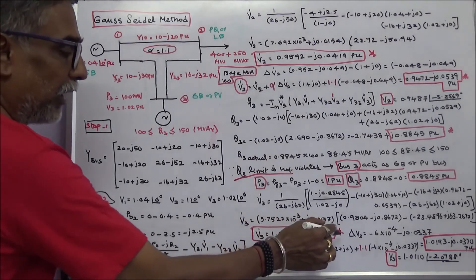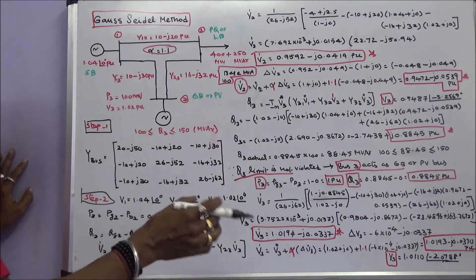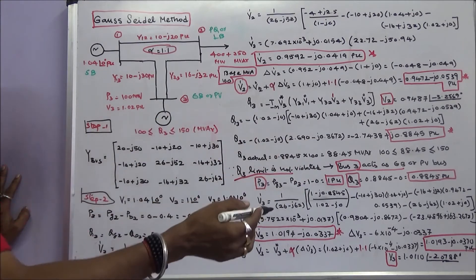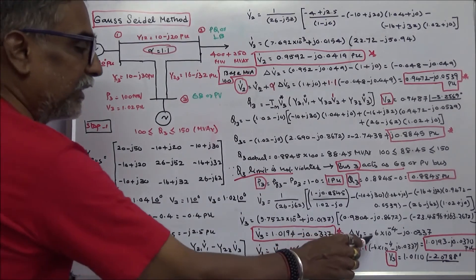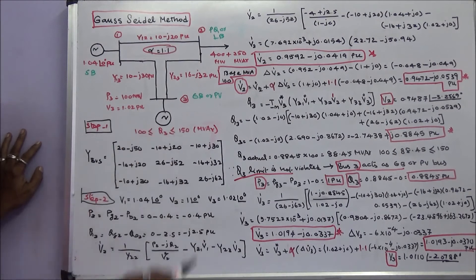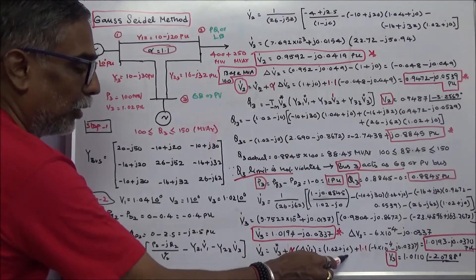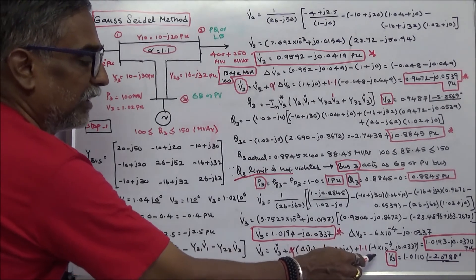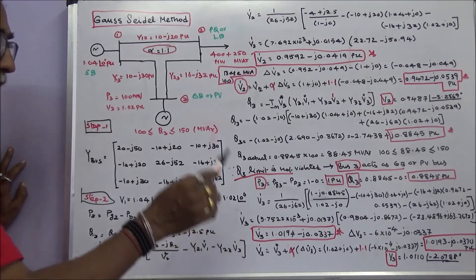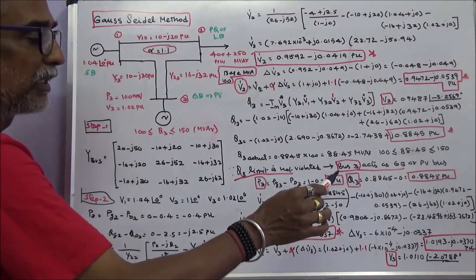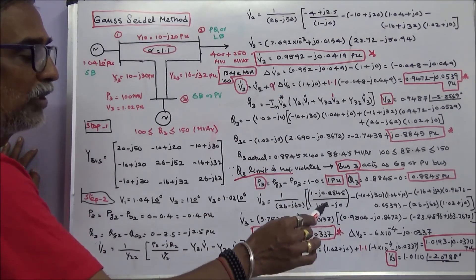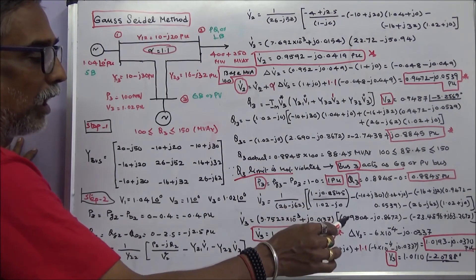Now we calculate the difference: calculated value minus assumed value. The assumed value is 1.02 + j0 and the calculated value is 1.0194 − j0.0337. The difference is −1.6×10⁻⁴ − j0.0337 per unit. The V3 accelerated first iteration value is: 1.02 + j0 + 1.1 × (−1.6×10⁻⁴ − j0.0337) = 1.0193 − j0.0337 per unit in rectangular form, or V3 = 1.0110∠−2.0788° in polar form.